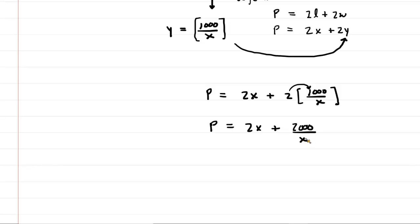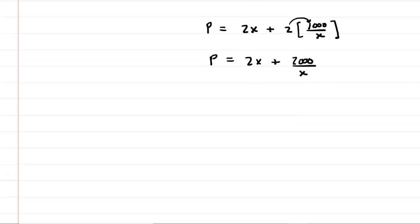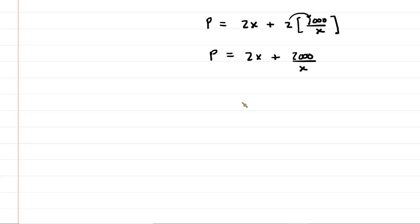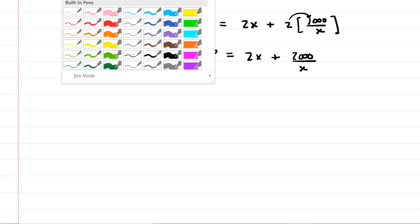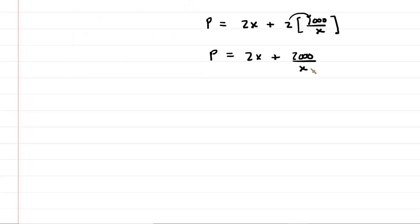The next step is to compute the derivative of this equation. But it turns out that it's going to be easier first for us to move the variable to the numerator here. It makes taking the derivative a little bit easier. So we can rewrite the perimeter equation as 2x + 2000x^(-1).